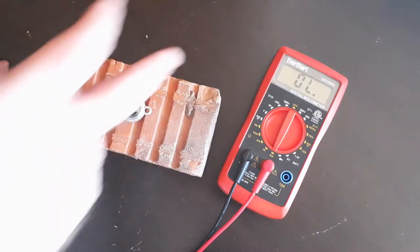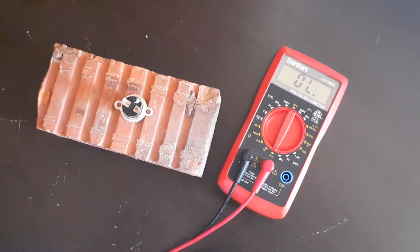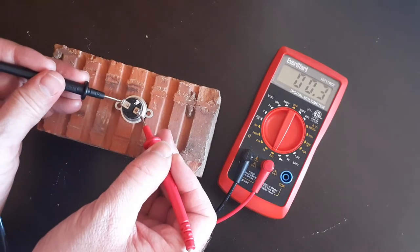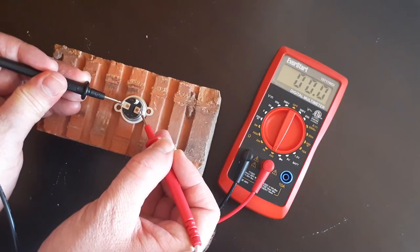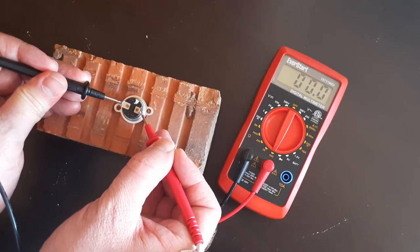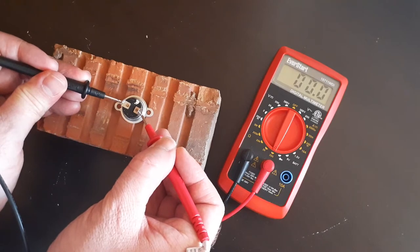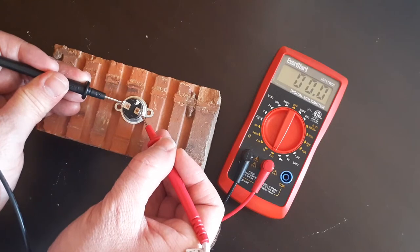Set your multimeter to the lowest ohm setting. Go ahead and touch the leads to the tabs. You'll get a small reading of 0.1, 0.0, 0.345, anything like that. If it changes from open line to any type of reading—